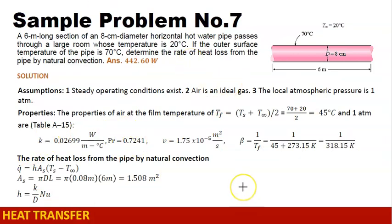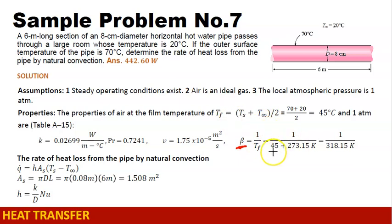We also need to compute the coefficient of volume expansion, beta. Beta is denoted by the reciprocal of the fluid temperature in Kelvin. That is why we add 273.15, giving us 1 over 318.15 Kelvin as our coefficient of volume expansion.